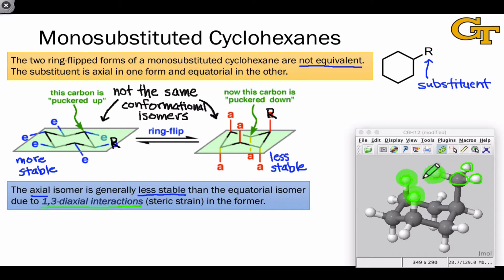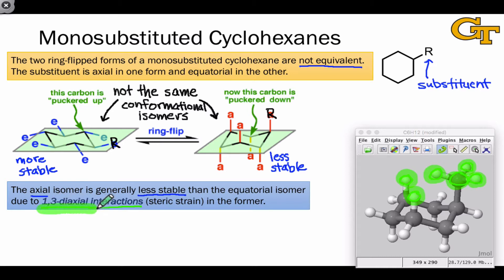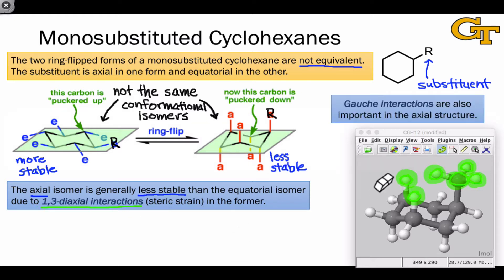And as a result, there's some overlap between the electron clouds of the methyl group and the other two axial hydrogens on the same side of the molecule. This is what we refer to as a 1,3-diaxial interaction, and it's steric strain that destabilizes the axial conformer.